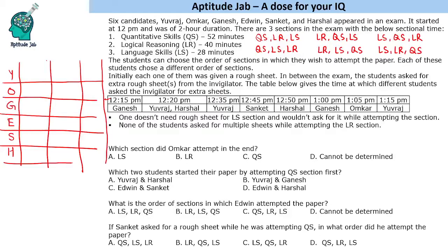One more important thing to note: for each section, it will be attempted twice in the same slot. For example, two people will attempt QS as the first section, two people will have LR as the second section — every section will be attempted twice in each of the three slots for uniform distribution.